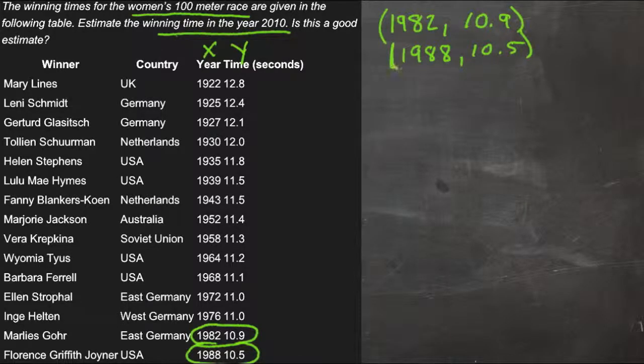So now we need to find our slope, so our slope is change in y over change in x, so if we subtract our y's and subtract our x's, we get negative 0.4 over 6, which reduces to negative 0.067. So negative 0.067, then is our m,